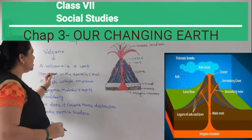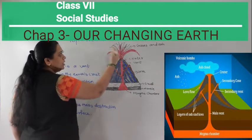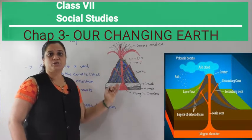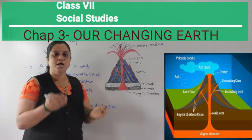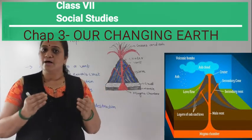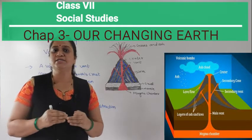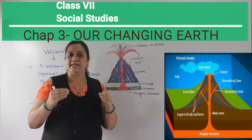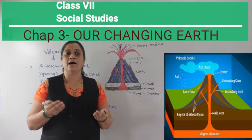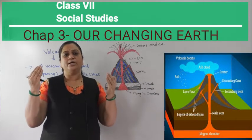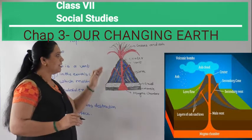To recap: a volcano is the vent that opens in the earth's crust through which hot molten magma material comes to the surface. Because of the movement of lithospheric plates, forces act in the interior of the earth, and due to high pressure and temperature, the magma is pushed towards the surface, forming a volcano.